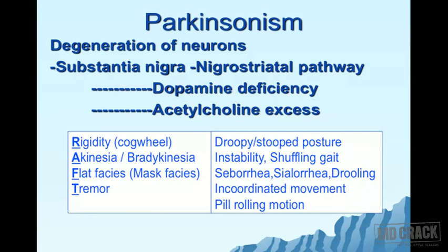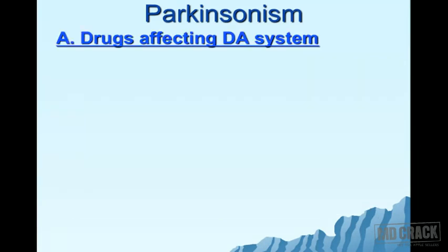These symptoms — incoordination of movements and the typical pill-rolling motion — are due to acetylcholine excess and dopamine deficiency in Parkinson's. The therapeutic approach is to work on the dopaminergic system or the cholinergic system. Drugs are classified accordingly: Group A covers drugs affecting the dopaminergic system.